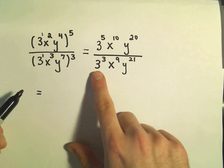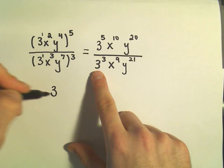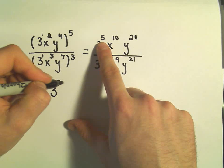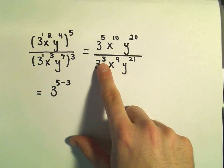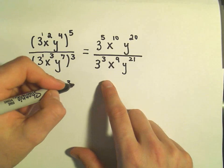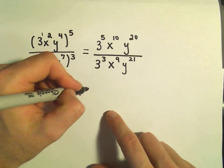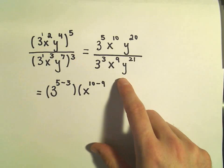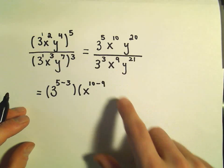So I see that there's threes. So there's the same base. One thing you can do is you simply take the top exponent minus the bottom exponent. And then we would have x to the tenth minus 9. So 10 minus 9. So I'm taking the top minus the bottom.